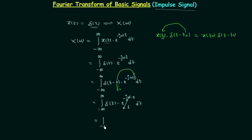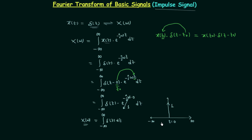So finally we have the integral from minus infinity to infinity of δ(t) dt. This means our Fourier transform X(ω) equals the area under the unit impulse signal from minus infinity to infinity. We know the unit impulse signal has area equal to 1 when t = 0, so integrating from minus infinity to infinity includes that point, and the result is always 1.